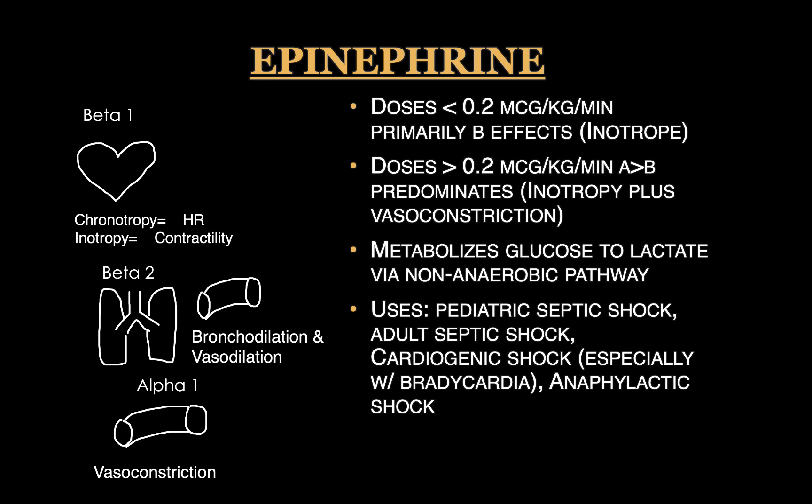In terms of dosing thresholds, definitely less than 0.2 micrograms per kilogram per minute you're getting inotropic effects, but above about 0.1 micrograms per kilogram per minute you're starting to get some alpha effects. Above 0.2 micrograms per kilogram per minute you're getting more alpha effects. If you're starting epinephrine for inotropic effects, keep doses less than 0.2 micrograms per kilogram per minute. It can be used for hypotension related to bradycardia or cardiogenic shock. It has been studied head-to-head with norepinephrine in adult septic shock with no outcomes difference, though it is currently a second-line drug in the septic shock guidelines.